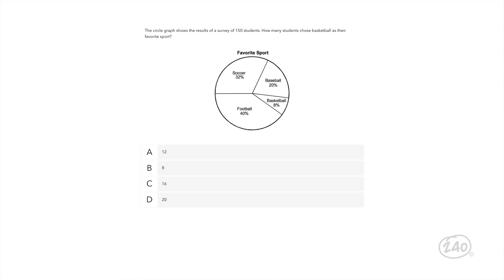Let's do a tricky question from the data analysis section. The circle graph shows the results of a survey of 150 students. How many students chose basketball as their favorite sport? The problem gives us survey data, a pie chart, and asks how many students chose basketball as their favorite sport. I see an 8% wedge for basketball, so I'm inclined to pick that one. Rats, that seemed too easy. Let's take a step back and try again.